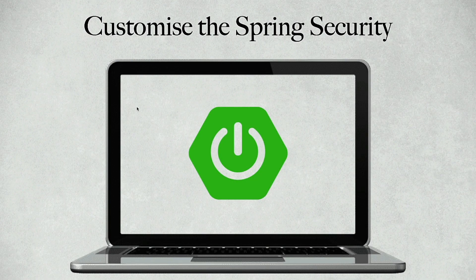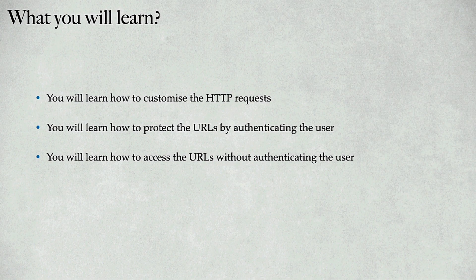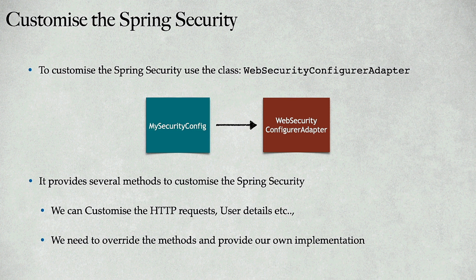In this video we will learn how to customize Spring Security as per our needs — how to customize HTTP requests, how to protect URLs by requiring authentication, and how to allow URLs without authentication. When working with Spring Security, whenever we want to customize it, we should use a special class called WebSecurityConfigurerAdapter, which is provided by Spring Security.